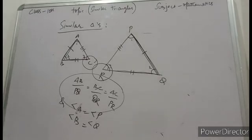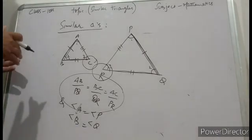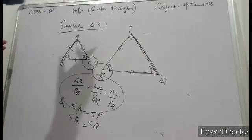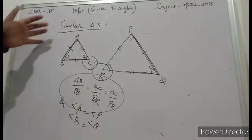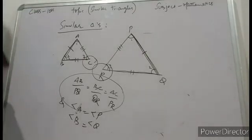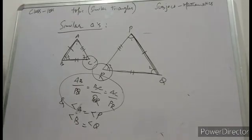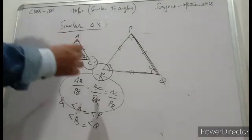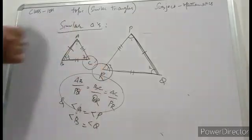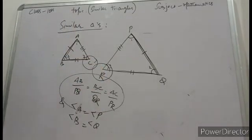So two triangles are similar if the sides of one triangle are in equal ratio or proportional to the corresponding sides of the other triangle, and angles are equal to each other.